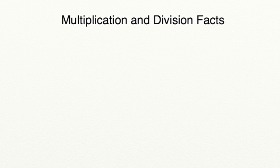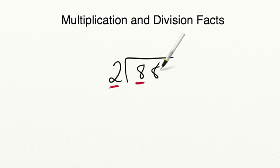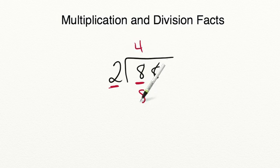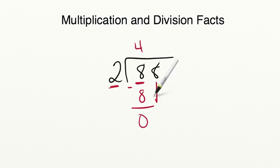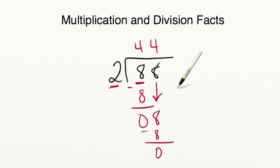You may also need to use long division to find the quotient of a problem. Let's divide 88 by 2. When doing long division, you first take your divisor and see how many times it can go into the first digit of your dividend. 2 can go into 8 four times because 2 times 4 equals 8. Write 8 below and subtract: 8 minus 8 equals 0. Drop down the next 8 and repeat — 2 can go into 8 four times again. 88 divided by 2 gives us a quotient of 44.